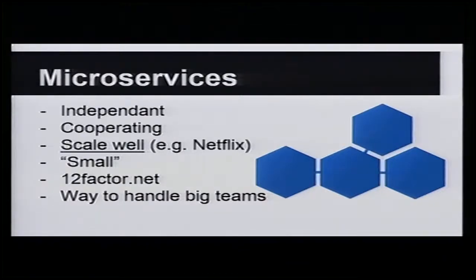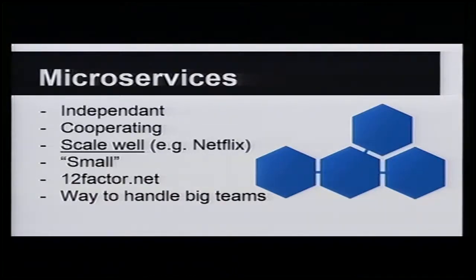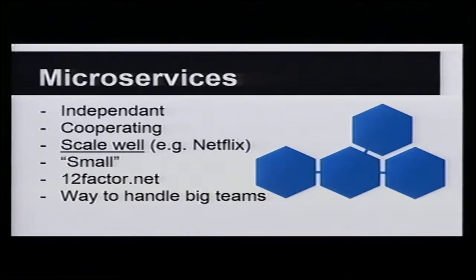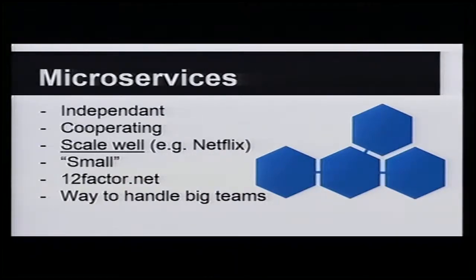A microservice is a vague term — it can be 50 lines of code or 5,000 lines of code. Basically it has to do one thing well. Their main purpose is to scale well; that's why they were introduced. They are also somewhat about people: if you do a big project working on a monolithic service in a 50-person team, it's not going to go well.